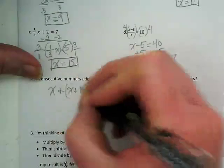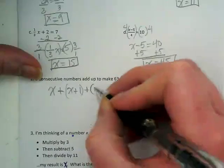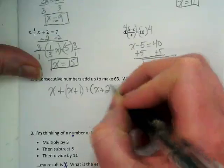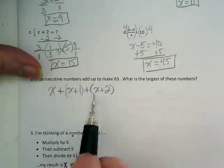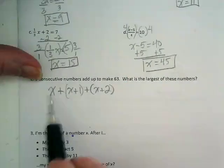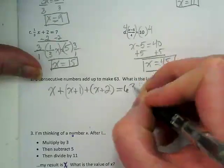I'm going to start with x as my first number. x plus 1 would be my second number, because it's one more. And x plus 2 would be my third number, because 1, 2, 3. This is 2 more than this one. These all equal 63.